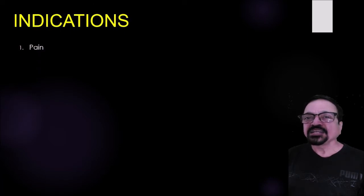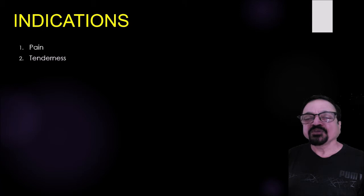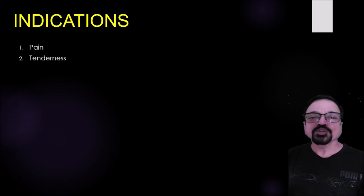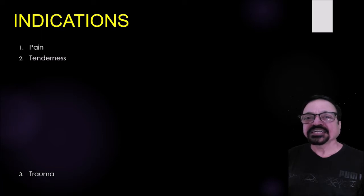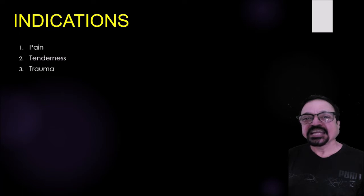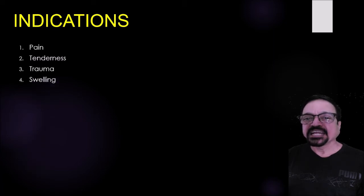Now let's go to the topic — the knee joint. Starting with the AP projection. The usual indications include pain irrespective of cause — it may be following trauma, following fever, or without any identifiable cause. Pain can be of short or long duration. Tenderness is another indication: when we palpate the joint, certain tender points should be noted by the technician so that the radiograph clearly shows that area.